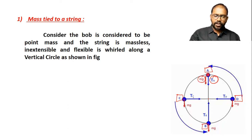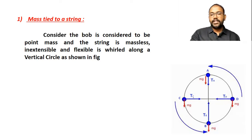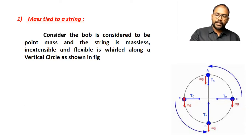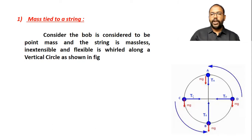You can see the direction of weight and tension. Tension is always along the string — remember that. So this is tension at D, tension at C, tension at B. But weight is always in a downward direction. At position C, weight is downward. At position B, D — you can see the different positions and the direction of weight at every point. The direction is the same everywhere: it is downward.